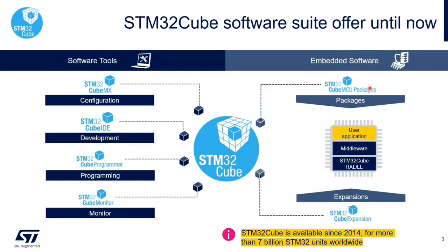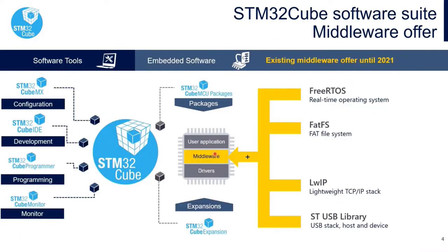In terms of software, we provide software packages meant to support a given series, so you have packages for each series that we provide. There are also expansion packs meant to provide additional functionalities you could need in your application — for instance, EEPROM emulation. Talking about middleware and firmware, this is our offering so far since 2021: basically the FreeRTOS operating system paired with additional middlewares, typically for FAT file system, TCP/IP stack, and the USB library.